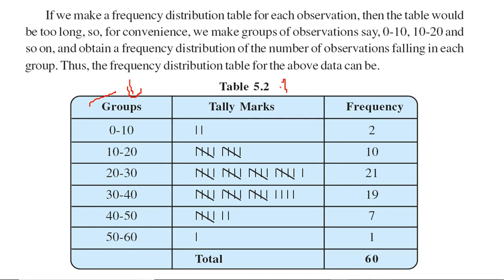We'll first make groups, then do tally marking, then the frequency. We'll just add these number of vertical bars and put it here. We'll try to group them: 0 to 10, 10 to 20, 20 to 30, 30 to 40, 40 to 50, 50 to 60. Since 0 is included here, 10 will not be included here. We'll include 10 in the next group. So 0 to 10 means 0 to 9 basically, then 10 to 19, 20 to 29, and so on.